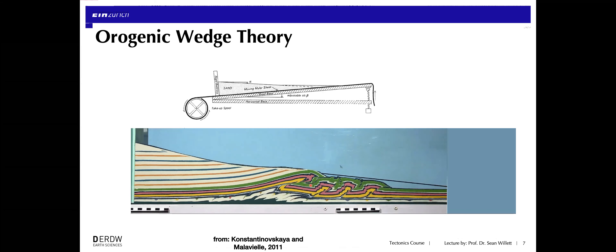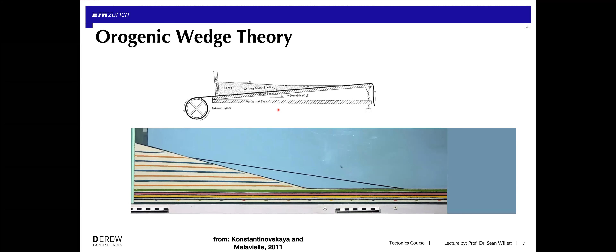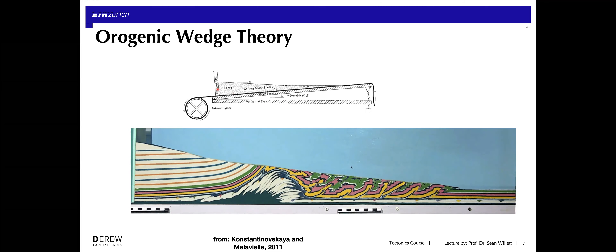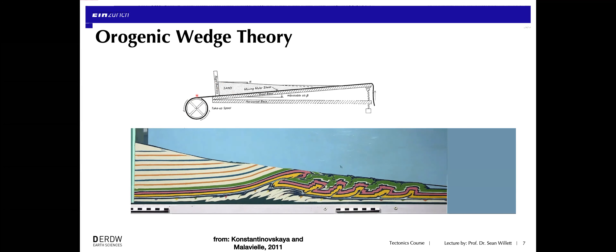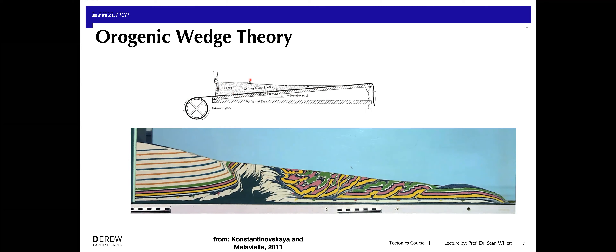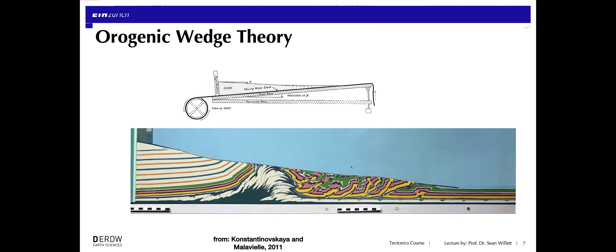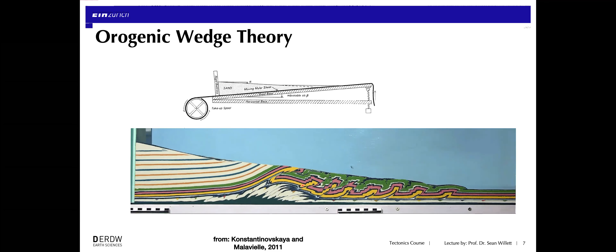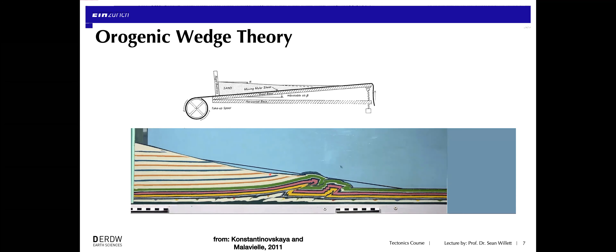A more modern version of that same process is shown here — a movie of a deforming orogenic wedge being formed by a little apparatus that, rather than pushing from the back, is pulling the material on a plastic sheet taken up on a wheel. That sheet goes underneath a layer of sand, pulling that sand into the deforming zone. You can see the original flat colored sand is progressively deformed: a whole series of thrust faults form first in the back and then propagate out towards the front, stacking up and thickening into a wedge form.